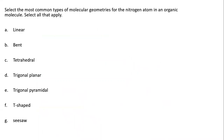The last question deals with heteroatoms found in organic molecules. Organic molecules usually contain carbon and hydrogen, with nitrogen and oxygen as common heteroatoms. Importantly, organic molecules will only have up to four electron pairs around the central atom, so geometries like T-shaped and seesaw — which require five electron pairs — won't occur in normal organic molecules.